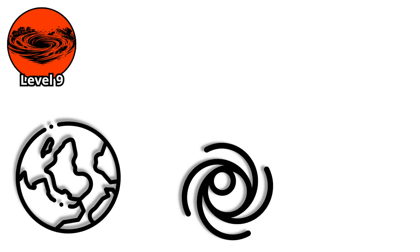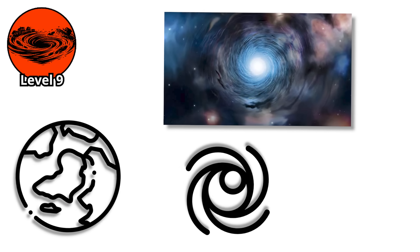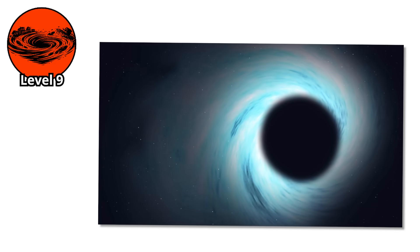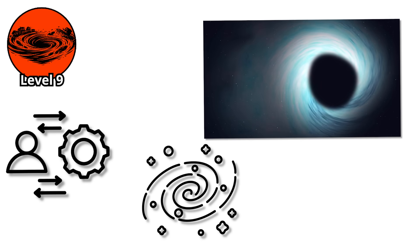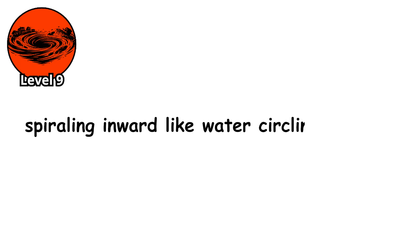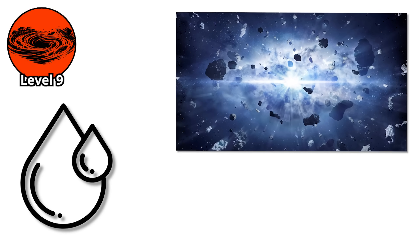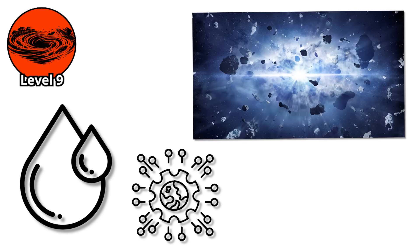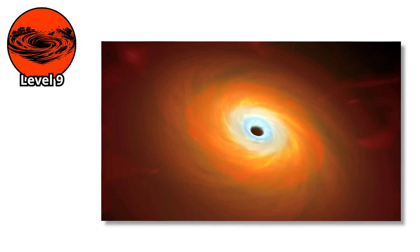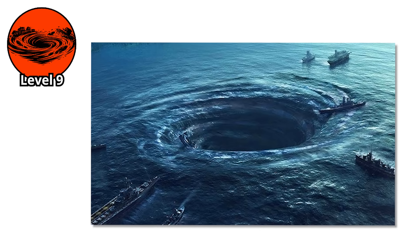Now we leave Earth entirely and enter a realm where whirlpools become death on a cosmic scale. A black hole doesn't just pull things straight in. As matter approaches, it begins to orbit, spiraling inward like water circling a drain. Except the drain is a tear in spacetime itself, and the water is shredded atoms moving at a significant fraction of the speed of light. This spiraling disk of matter is called an accretion disk, and it's the most violent whirlpool in the universe.